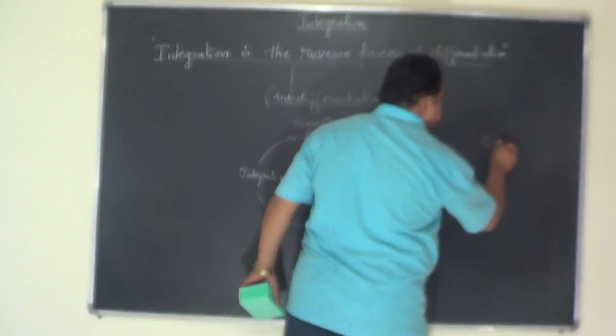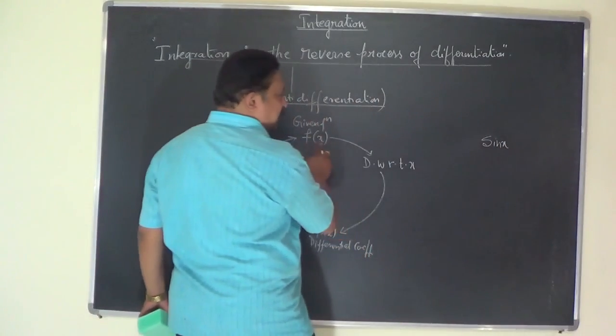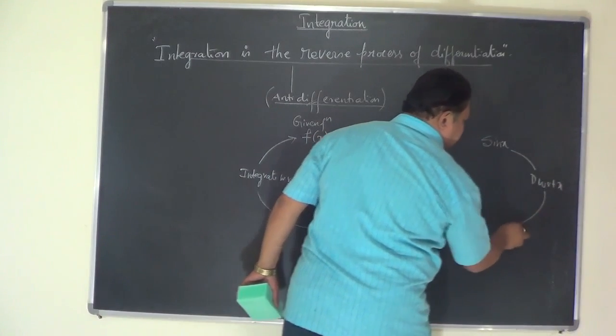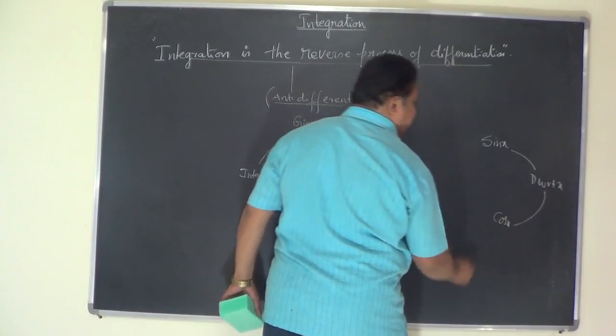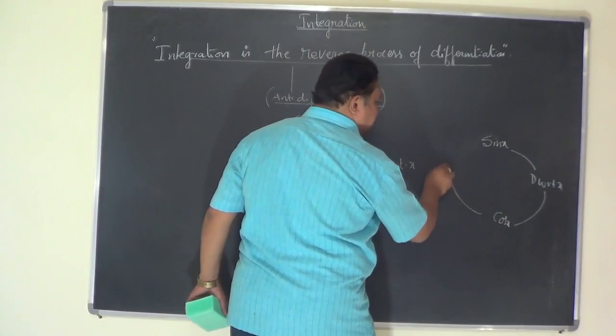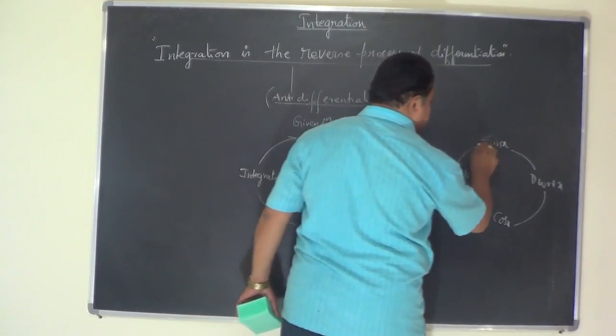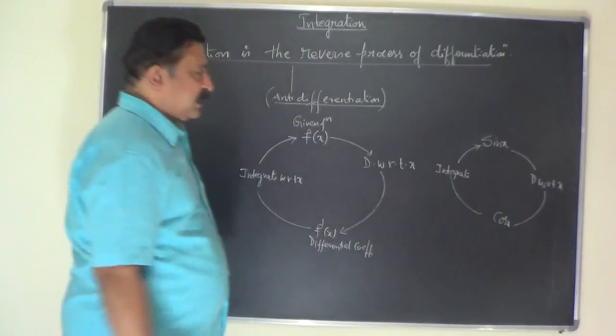Let's consider the function sin x. f of x is sin x. Differentiating with respect to x, we get cos x. That is f dash of x. Now integrate cos x with respect to x. Integrate cos x with respect to x. You will get that sin x.